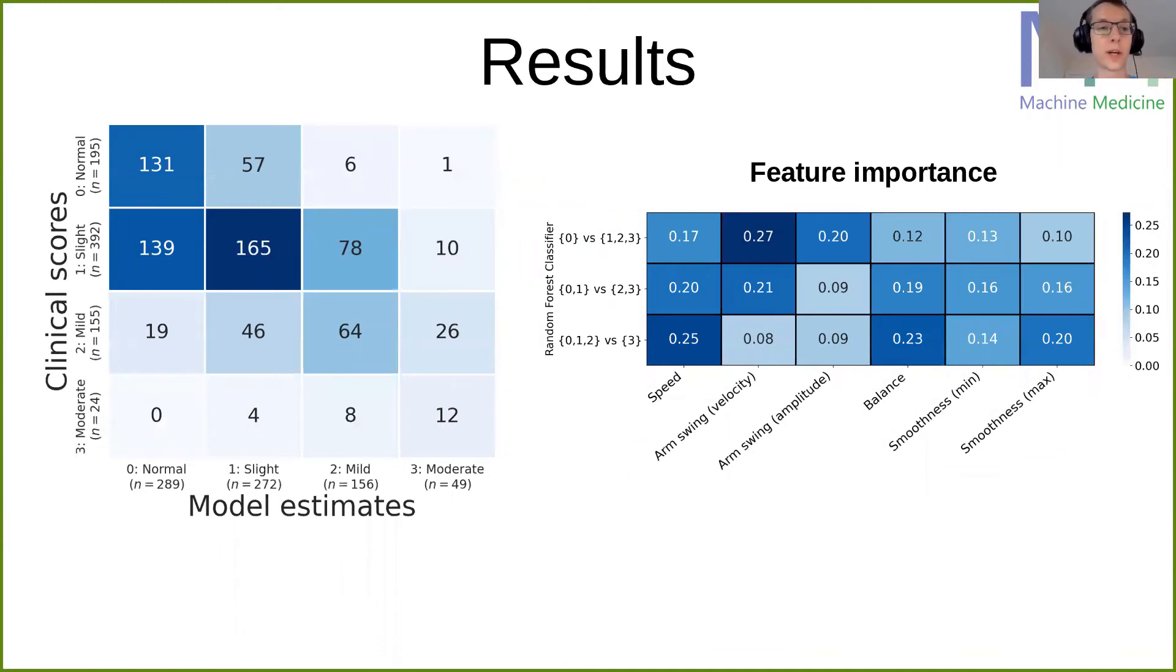Overall, our results were quite encouraging. We achieved a balanced accuracy of 50%, chance would be 25%. And in almost all cases, we agreed with the clinician plus or minus one point, or we have an accuracy plus minus one of 95%.